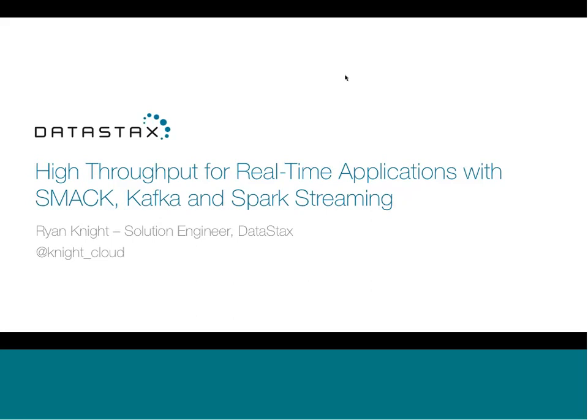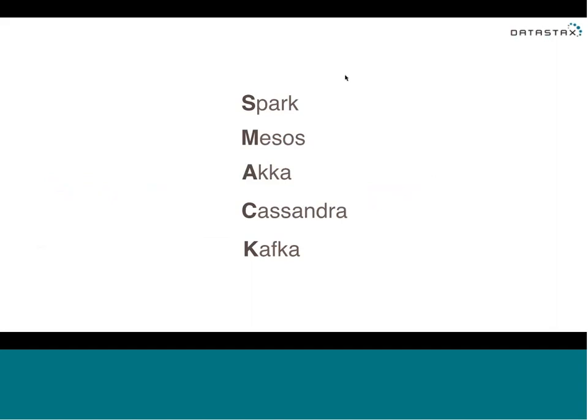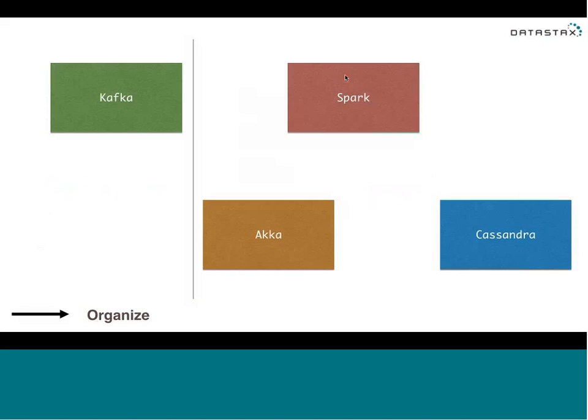Hello, Ryan Knight here. So, last time we gave an overview of the SMAC stack — Spark, Mesos, Cassandra, and Kafka — and how it can be used to build data pipelines. What was covered last time, as a quick review, is how Kafka basically allows you to decouple your data pipelines by acting as a message queue, providing order from chaos by creating a queue to line up your data in order for processing.